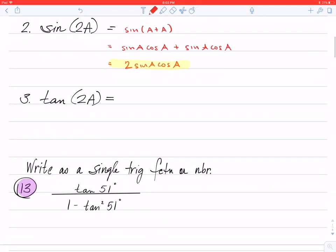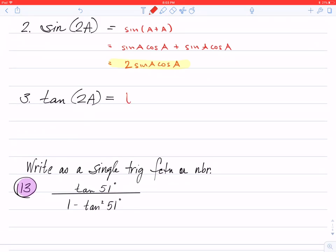Then we have tangent double angle. So if we change this to tangent of A plus A, this will be tangent of A plus the tangent of A, all divided by one minus the tangent of A times the tangent of A.